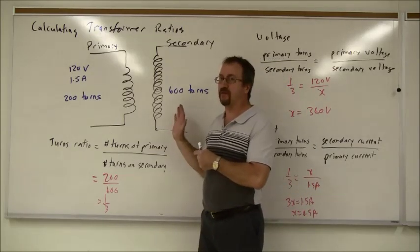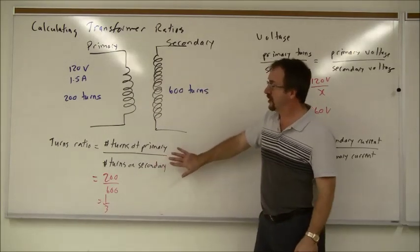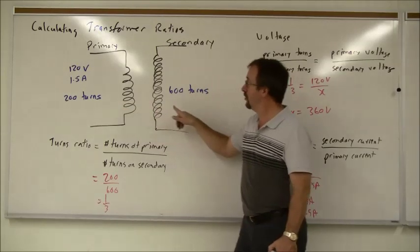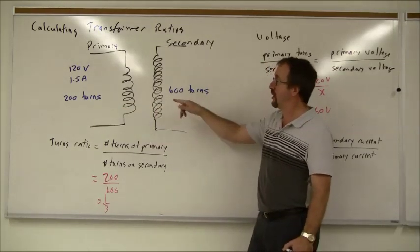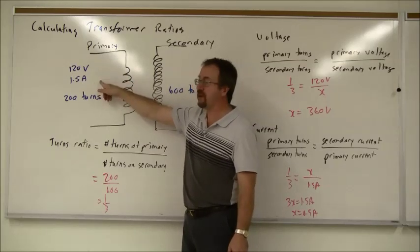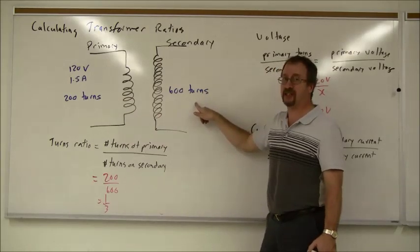Now, by doing an example, hopefully I can make this a little more real for you. To calculate the turns ratio, take the number of turns in the primary and the number of turns in secondary. So in our example, in blue I've written some sample information. We've got 120 volts in the primary, 1.5 amps, 200 turns. Secondary coil is 600 turns.